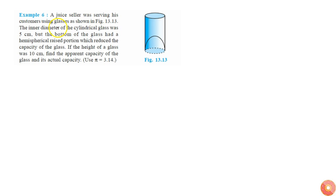Given that a juice seller was serving his customers using glasses as shown in this figure. The inner diameter of the cylindrical glass was 5 centimeters, and the bottom of the glass has a depression which is hemispherical in shape. The height of the glass is 10 centimeters.